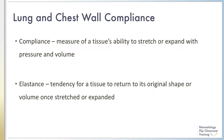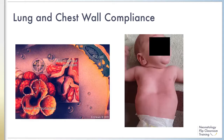Let us now look at the forces involved in the inspiratory and expiratory phases. Compliance is the measure of a tissue's ability to stretch and expand, while elastance is the tendency for a tissue to return to its original shape or volume. As discussed in the surfactant modules, preterm lungs have an increased alveolar surface tension secondary to a lack of surfactant. Once surfactant is administered, surface tension decreases and lung compliance improves.